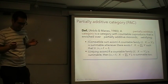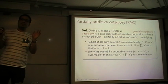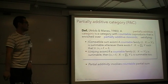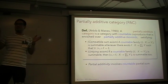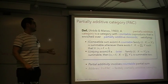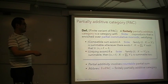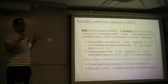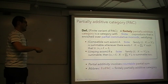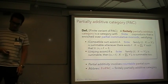What is a finpack? A partially additive category, PAC, was introduced by Arbib and Manes in 1980 for the study of program semantics. Partial additivity involves countable partial sums — for example, a partially additive monoid is a set with a countable partial sum. What I introduced is a finite version — I changed the condition from countable to finite. A finite partially additive category, finpack, is a category with finite products that is enriched over partial commutative monoids satisfying certain conditions. Finpack is an abbreviation for this term.